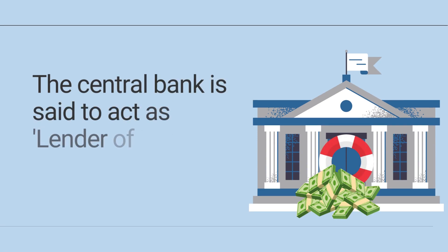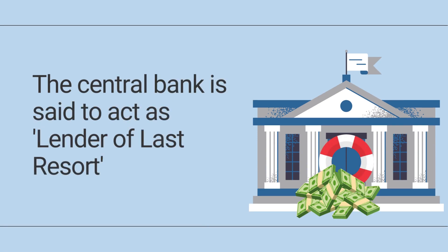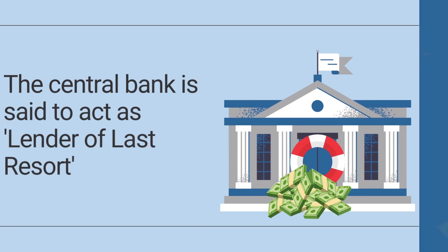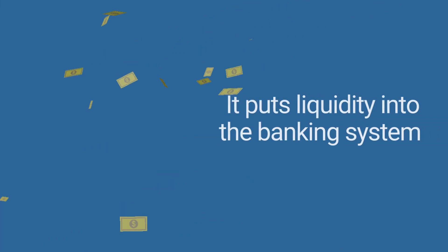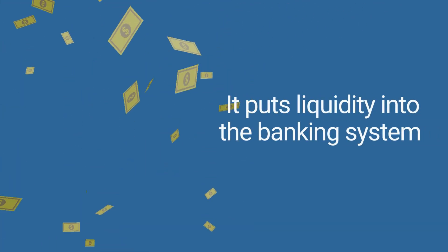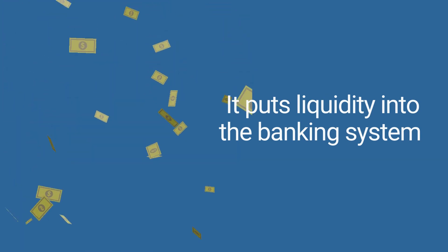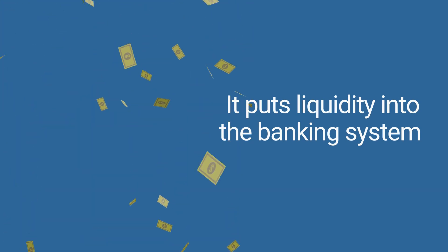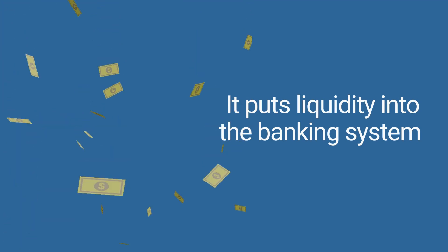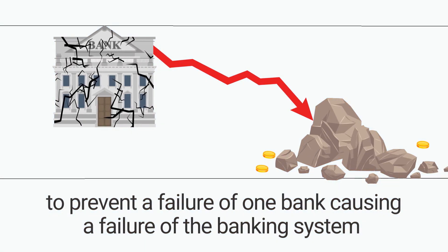The central bank is said to act as lender of last resort when it's putting cash — liquidity, as it's called — into the banking system to prevent the failure of one bank causing a panic, so that cash is withdrawn from all banks and they all fail.